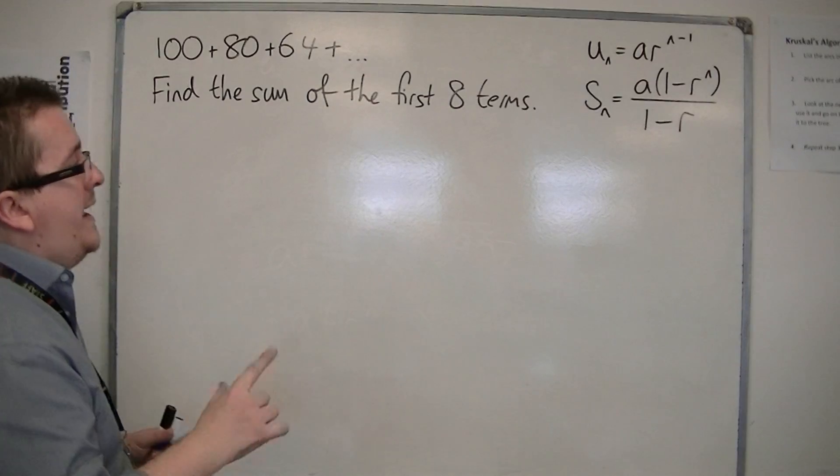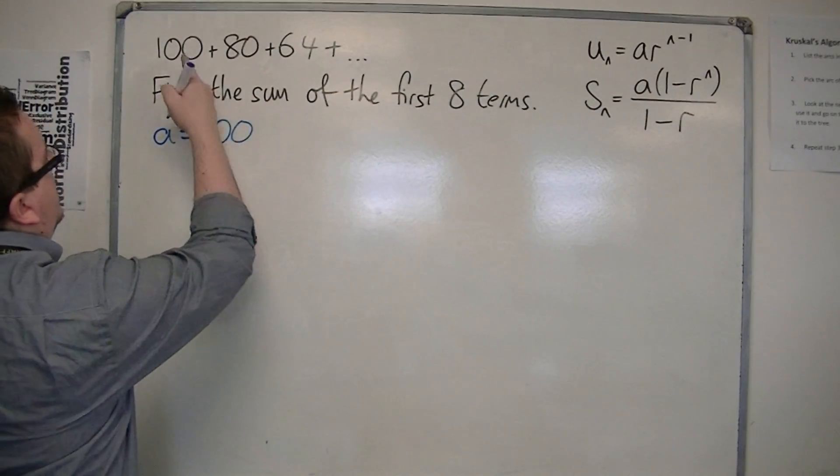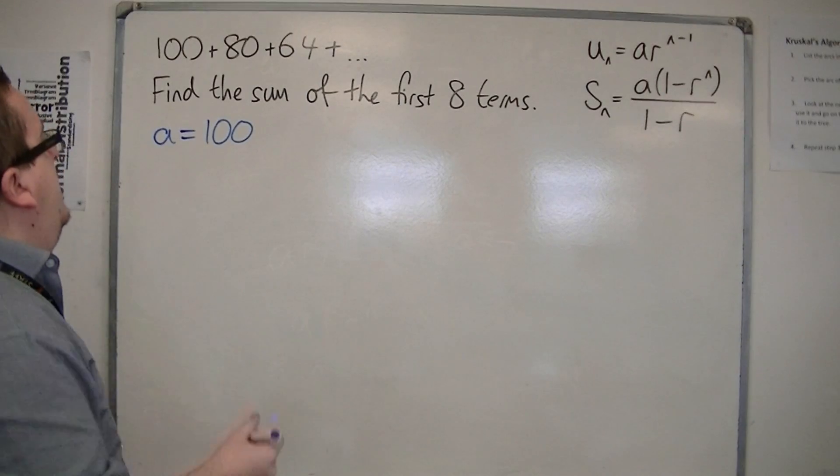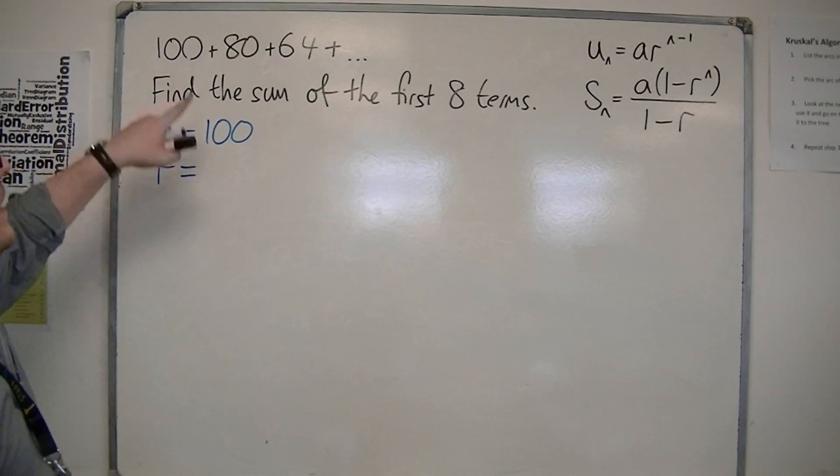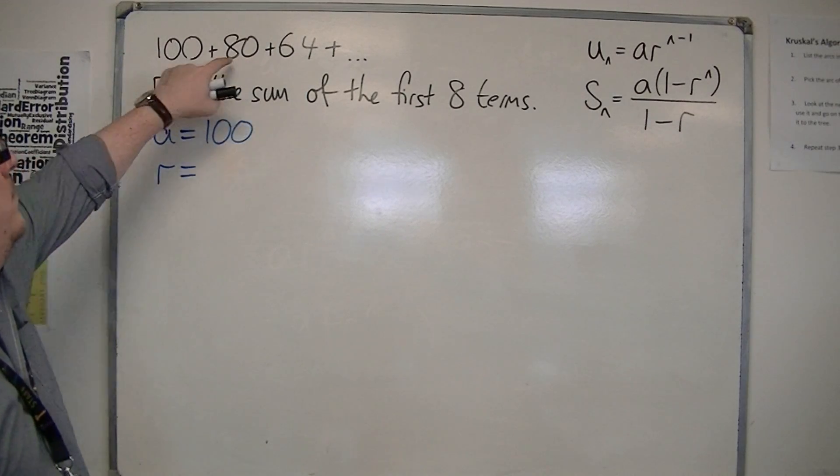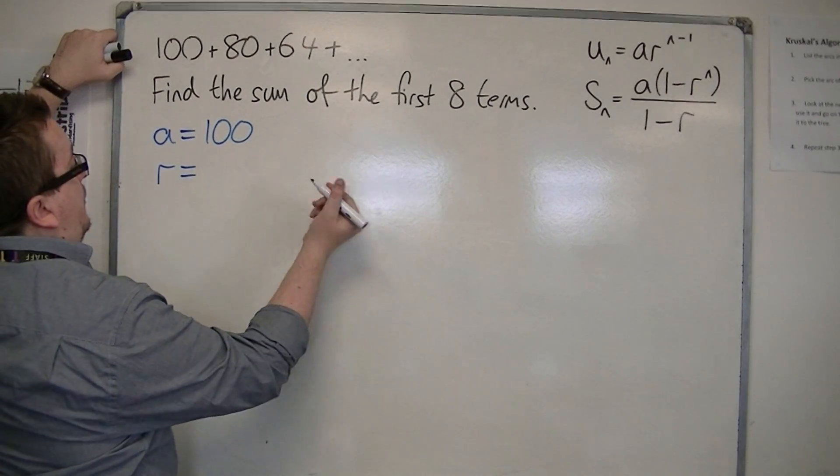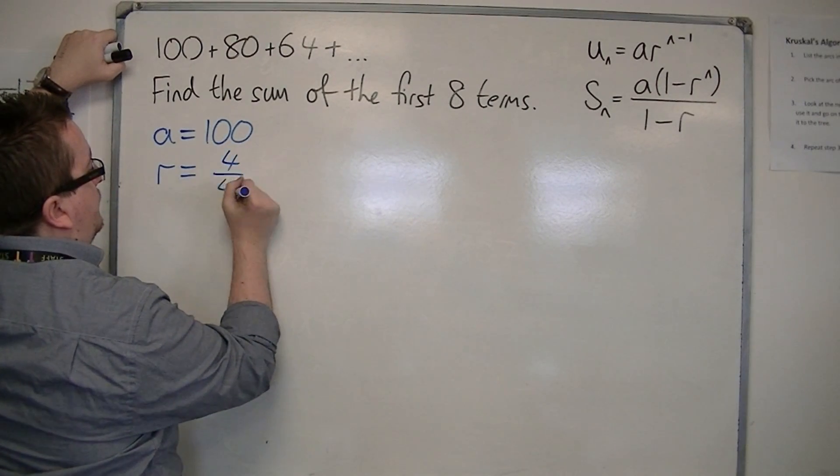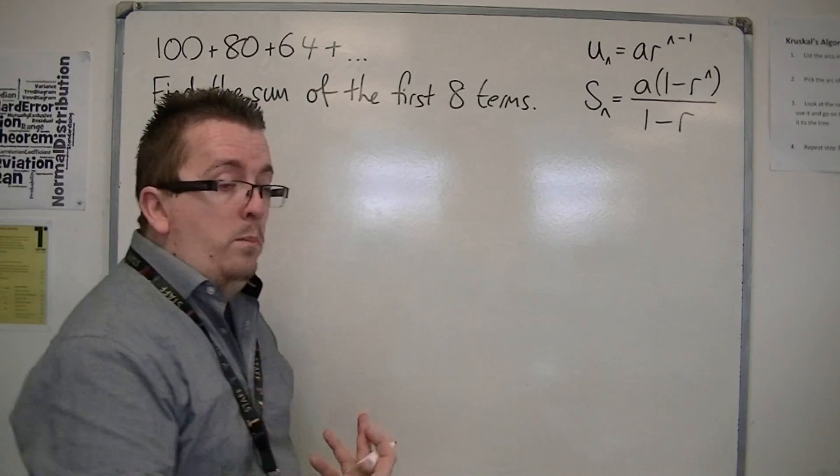We need to identify both A and R. So A is easy, that's 100, the first term in the series. And then you have the common ratio R. That can be found by dividing the second term by the first term. 80 divided by 100, which is 8 tenths, 4 fifths. So R is 4 fifths, or 0.8.